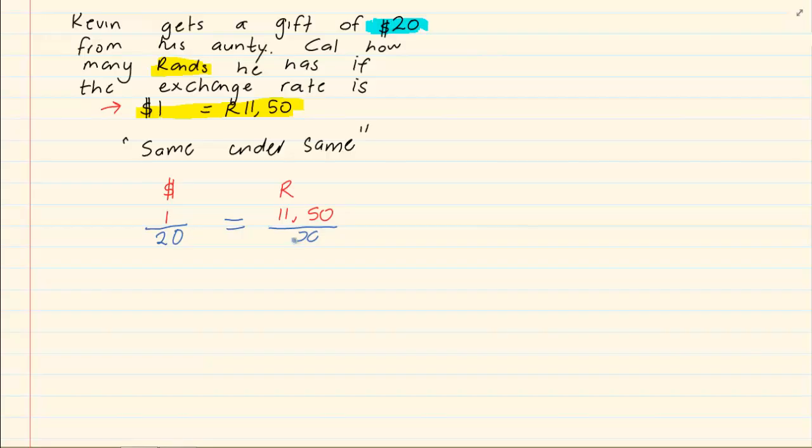Two fractions so we are going to cross multiply. So you are going to say x times one is x is equal to eleven rand fifty times twenty, which means that Kevin has two hundred and thirty rands.